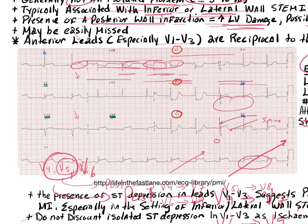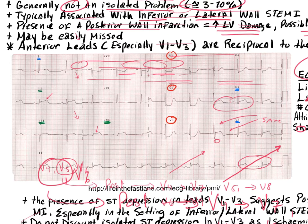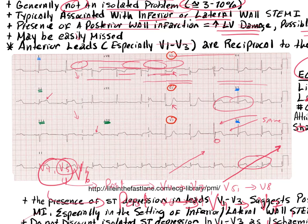Starting at leads 2, 3, and AVF — the inferior wall: there's elevation in leads 2 and 3, and elevation in AVF as well. Leads 2 and AVF are contiguous, so we're already looking at an inferior STEMI. Moving to V1 and V2, we see ST depression. V3 and V4 also show some depression — that could be a reciprocal change, since the anterior septal leads are roughly reciprocal to the inferior wall.